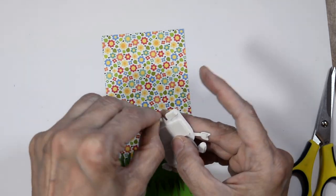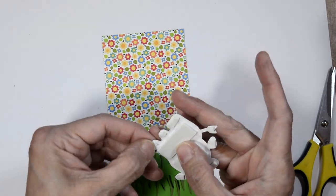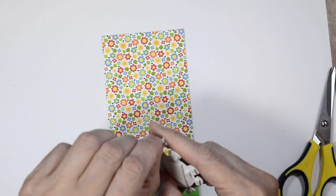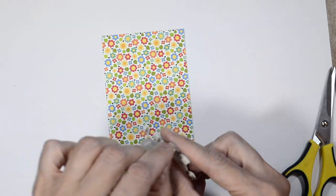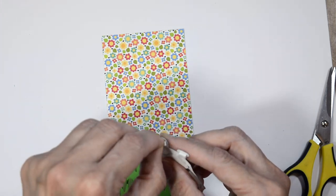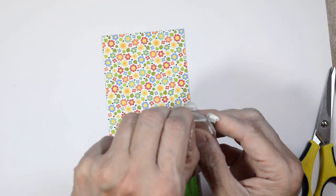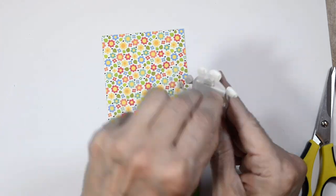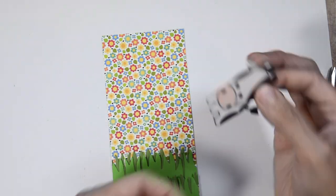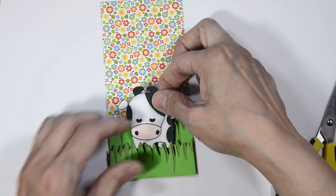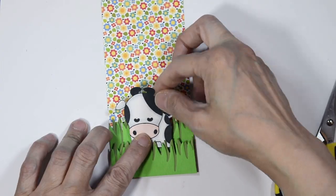There's our little cow. I have some foam adhesive on our little cow as well so I'm going to remove backing off all that foam adhesive and I'm going to be honest with you this is my least favorite part of creating, removing the back of foam adhesive. I just have a hard time with it so that's why it's not my favorite part.